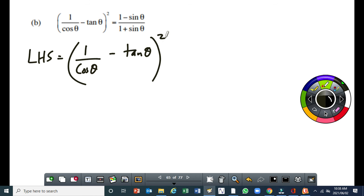Now my suggestion is convert the tan to sin over cos, that's the first thing, we end up with 1 over cos θ minus sin θ over cos θ.